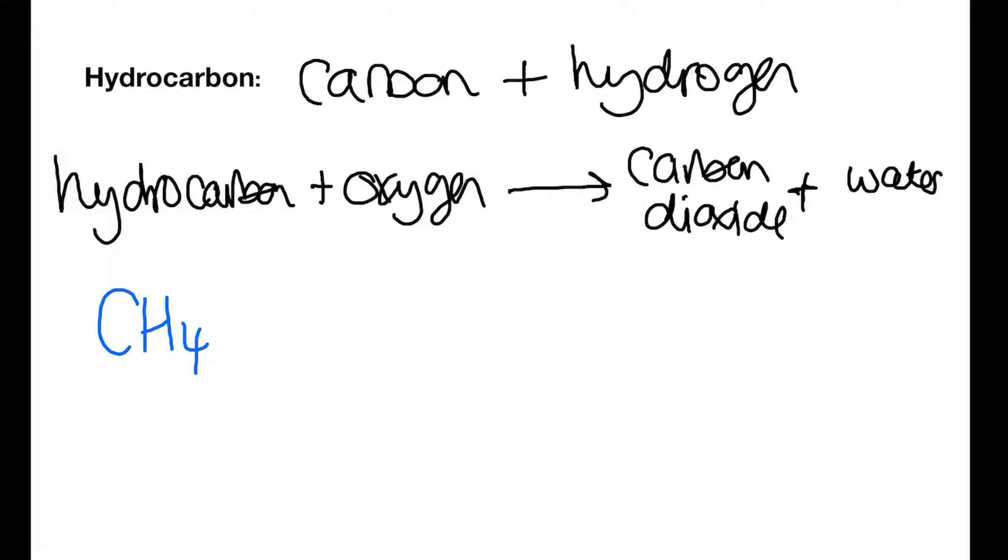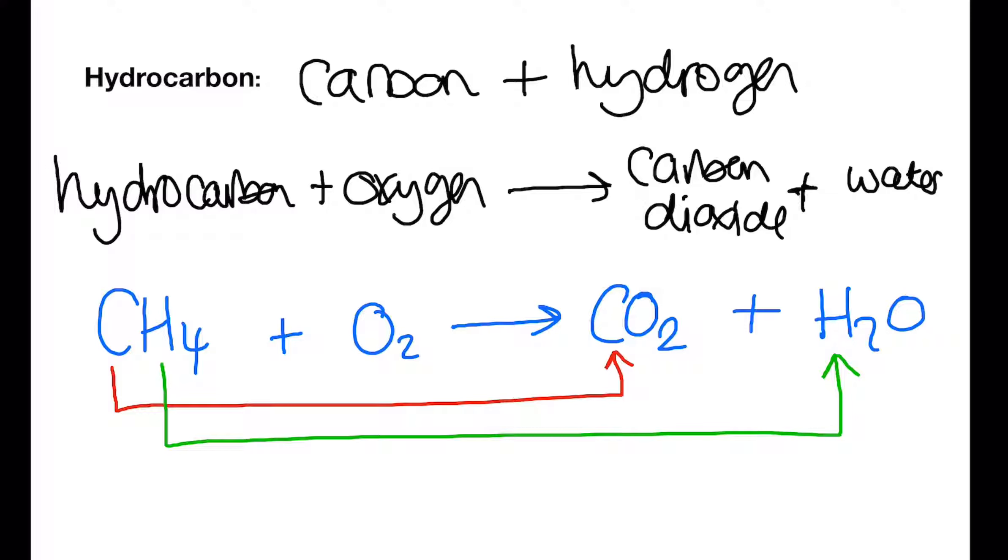Let's look at an example of a hydrocarbon. Methane is the simplest alkane with the formula CH4. When we burn methane and oxygen we produce carbon dioxide and water. We can see from the formula equation that the carbon is reacting with the oxygen to produce CO2. The hydrogen is reacting with the oxygen to produce H2O.